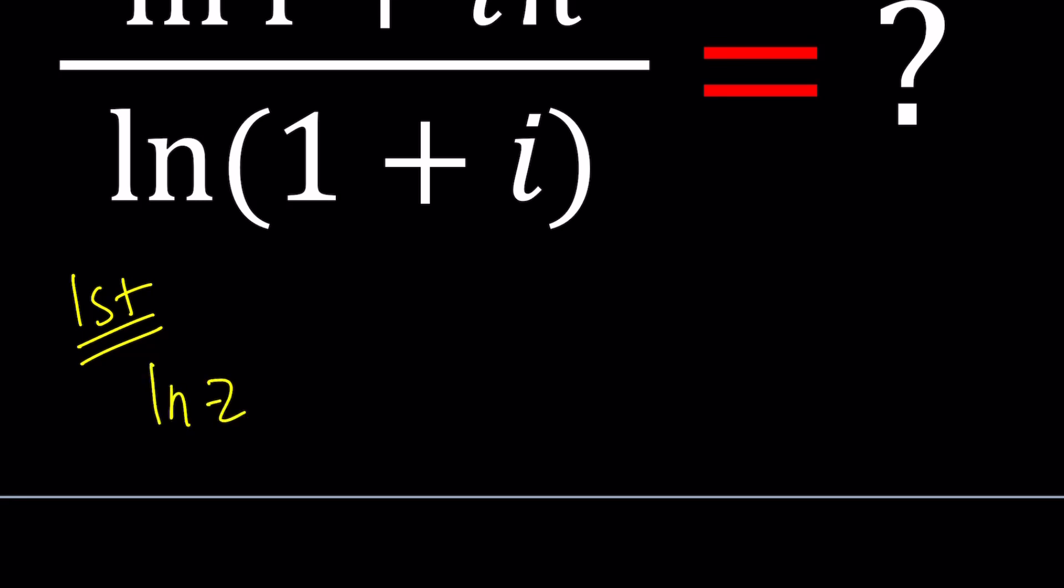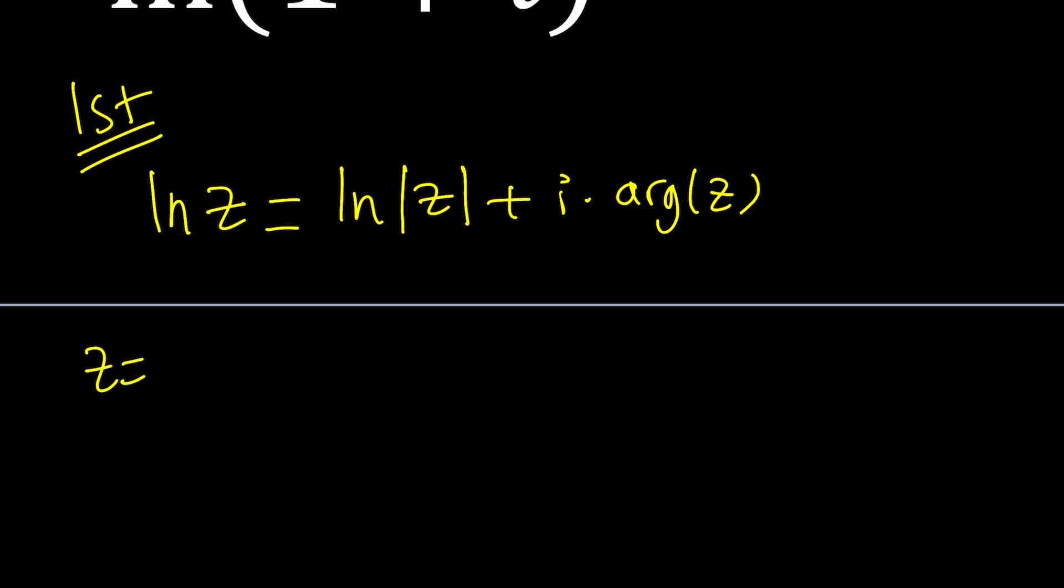Natural log of z is equal to natural log of the absolute value of z plus i times the argument of z. Make sense? It's that simple, right? Think about it. If you write z as r e to the i theta and replace r with absolute value of z and theta with argument of z, then you're going to get pretty much the same idea.